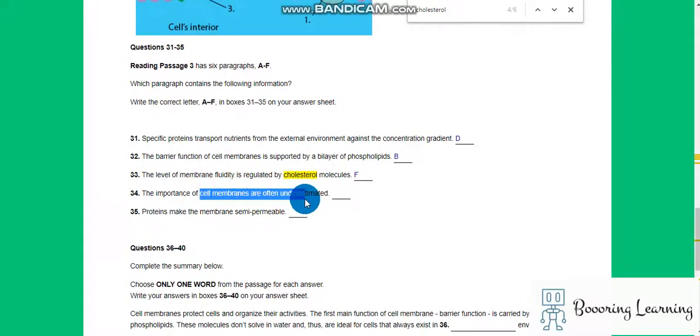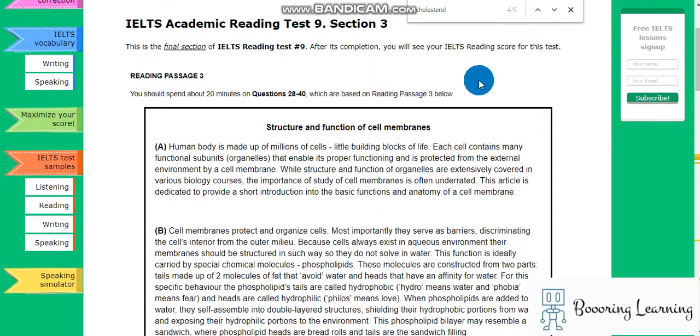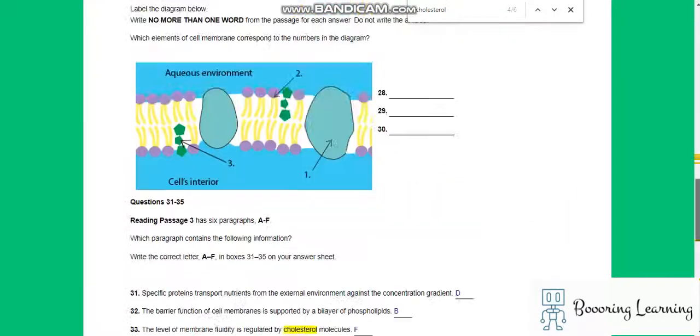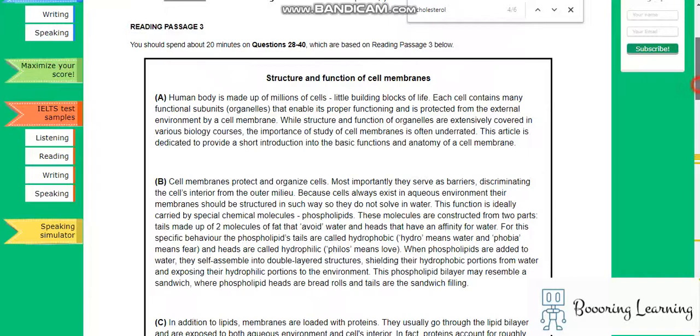The importance of cell membranes are often underestimated. The importance of cell membranes, it's A. Often underrated, so underestimated is paraphrased as underrated. A.